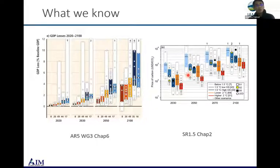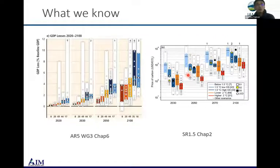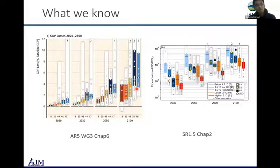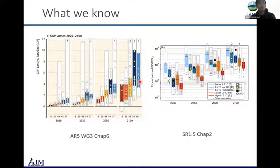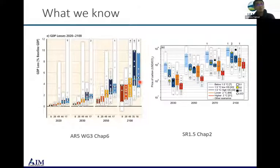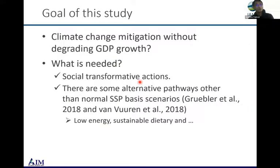Looking at recent IPCC reports, in particular focusing on mitigation costs, I took representative figures from AR5 and SR1.5. Unfortunately we cannot get the GDP loss, consumption loss, or additional energy system cost metrics in SR1.5, but in AR5 we see around three to five percent GDP loss for attaining two-degree stabilization, and 1.5 degrees would be a bit larger.